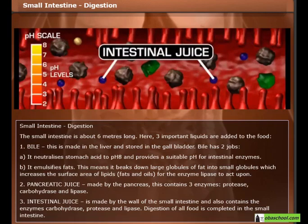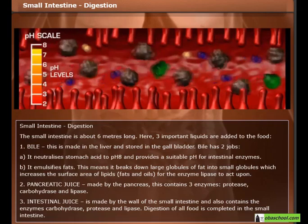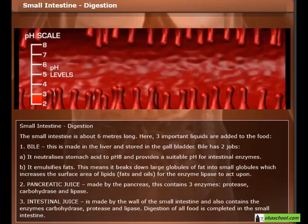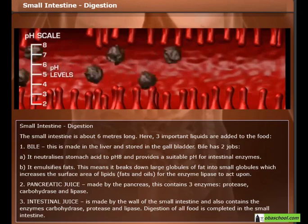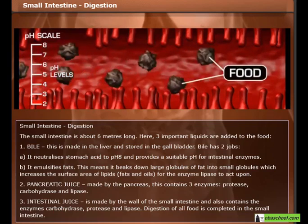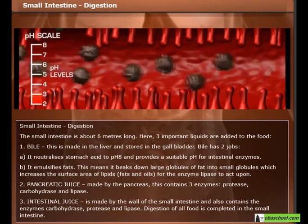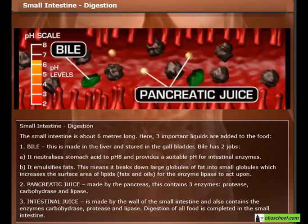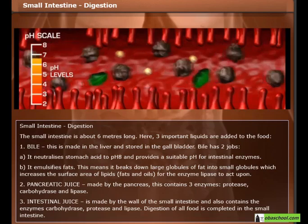Pancreatic juice, made by the pancreas, contains three enzymes: protease, carbohydrase, and lipase. Intestinal juice is made by the wall of the small intestine and also contains carbohydrase, protease, and lipase. Digestion of all food is completed in the small intestine.